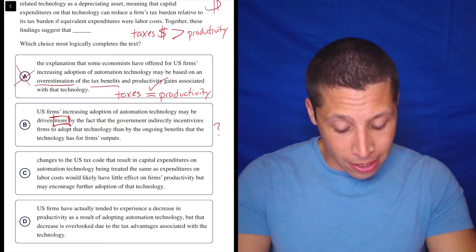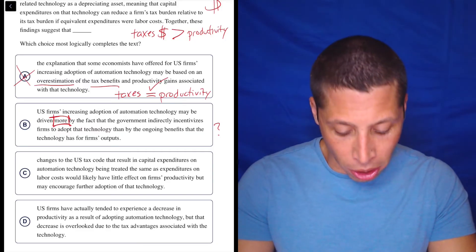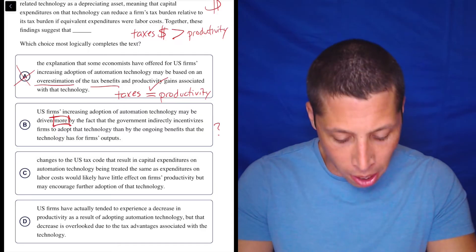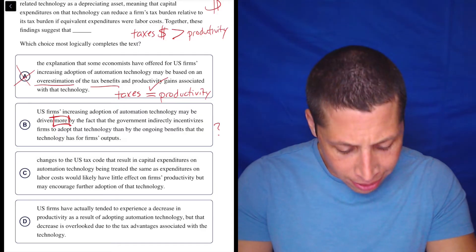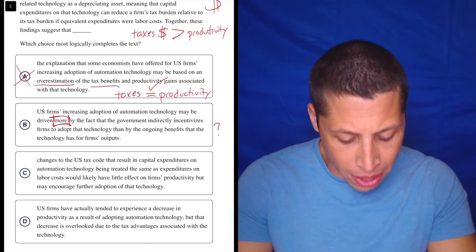Maybe it won't matter. C. Changes to the U.S. tax code that result in capital expenditures on automation technology being treated the same as expenditures on labor costs would likely have little effect on firms' productivity, but may encourage further adoption of that technology.